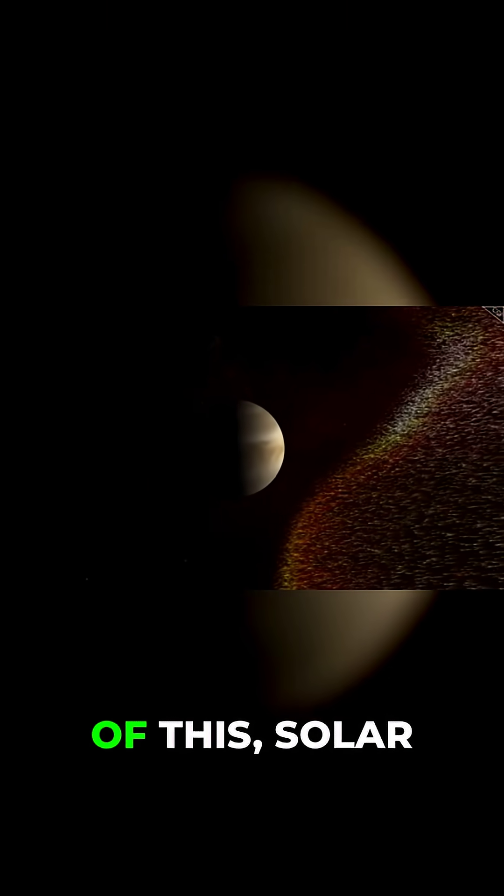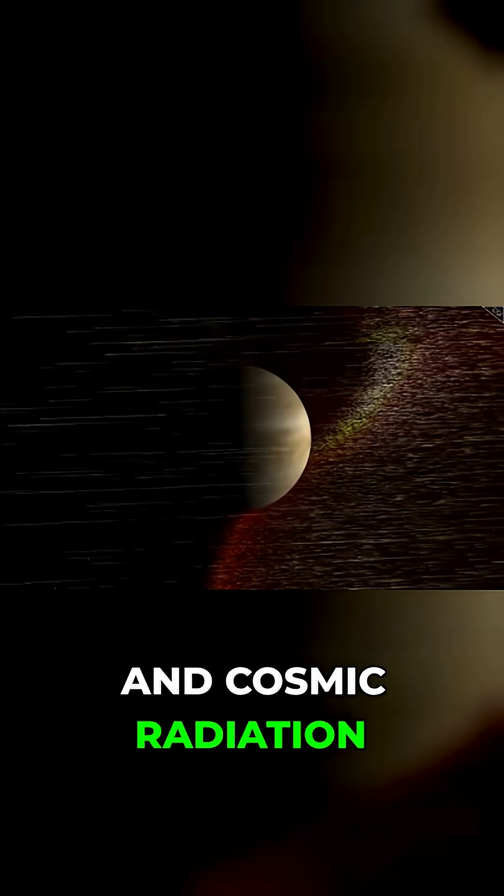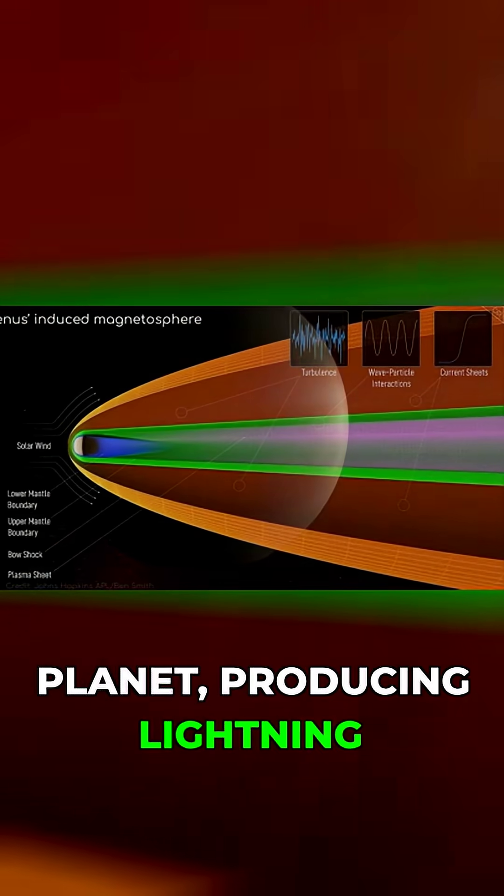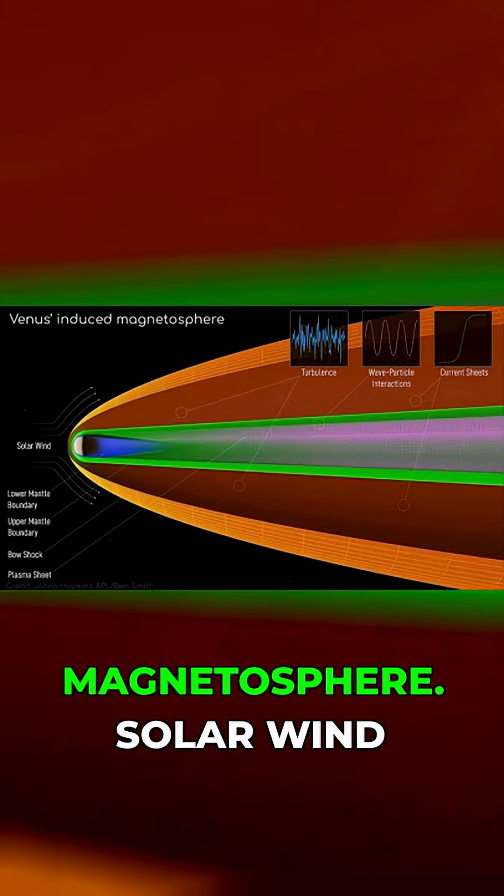Regardless, as a result of this, solar and cosmic radiation interacts a lot with the upper atmosphere of the planet, producing lightning and an induced magnetosphere.